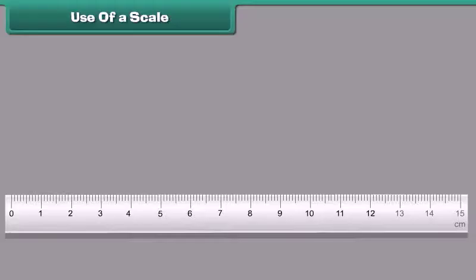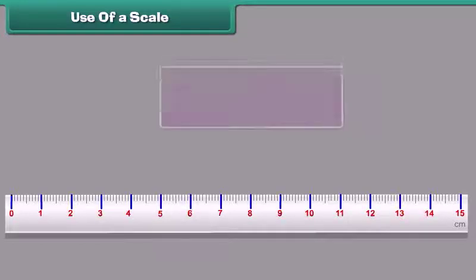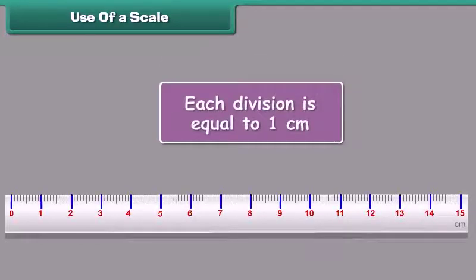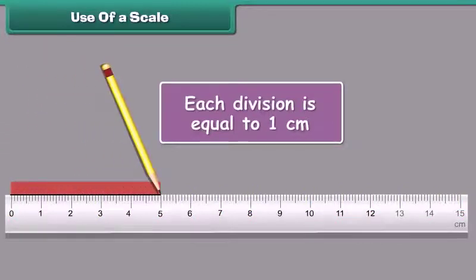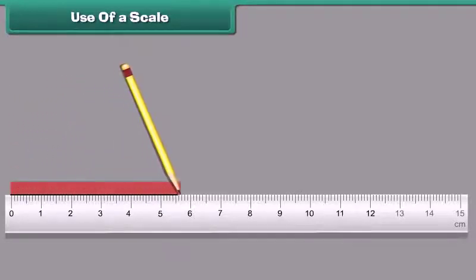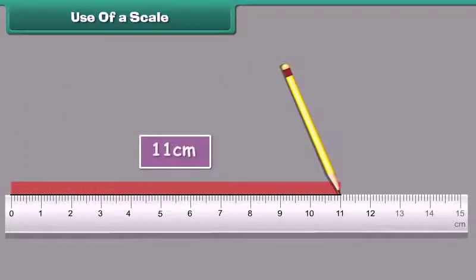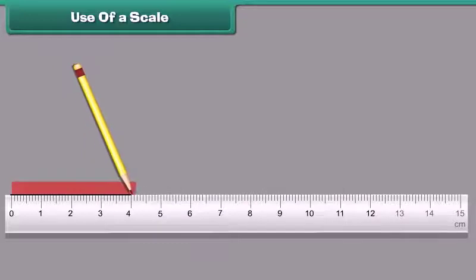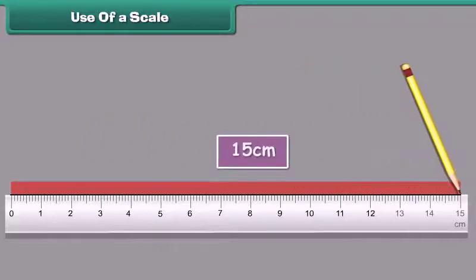Look at this ruler. Its margins show many divisions. Each division is equal to 1 cm. The numbers are written from 0 to 15. From 0 to 5, we get 5 cm. From 0 to 11, we get 11 cm. From 0 to 15, we get 15 cm.